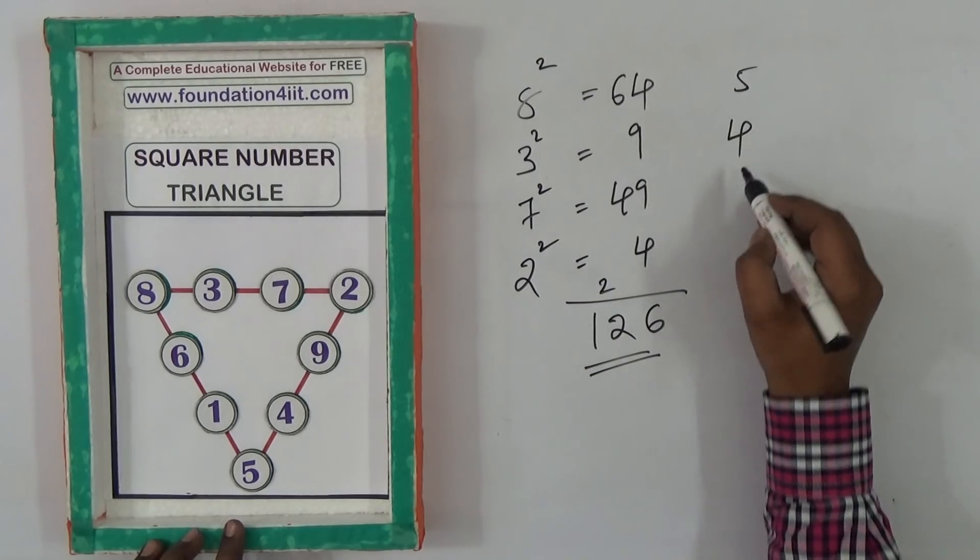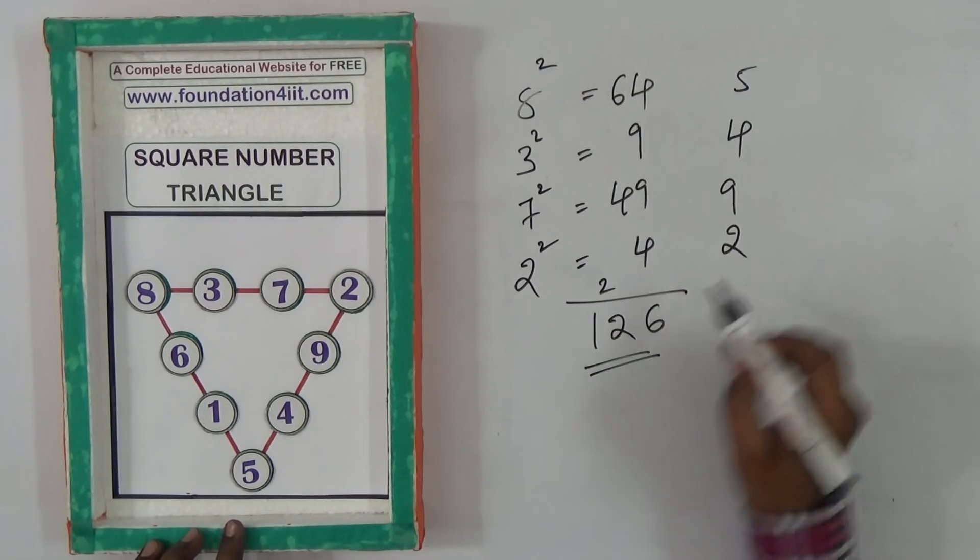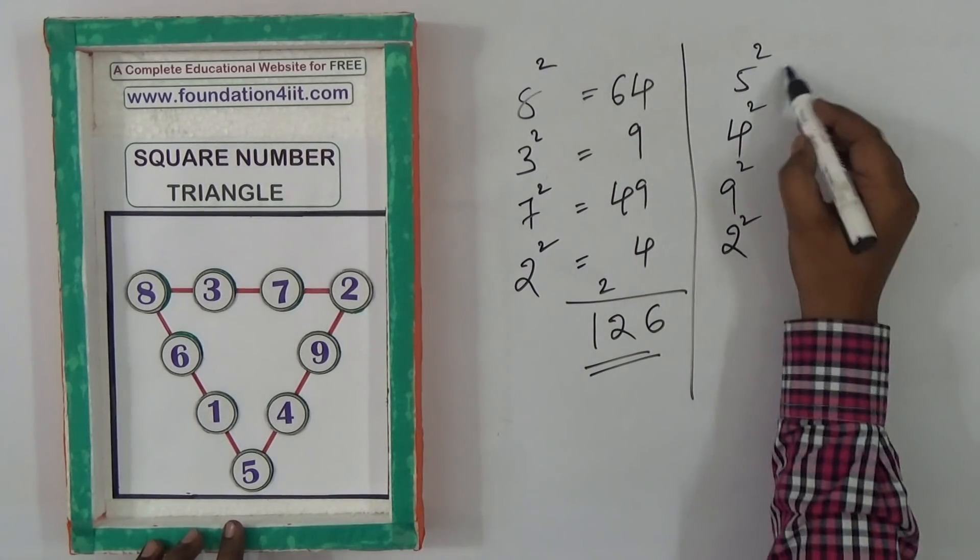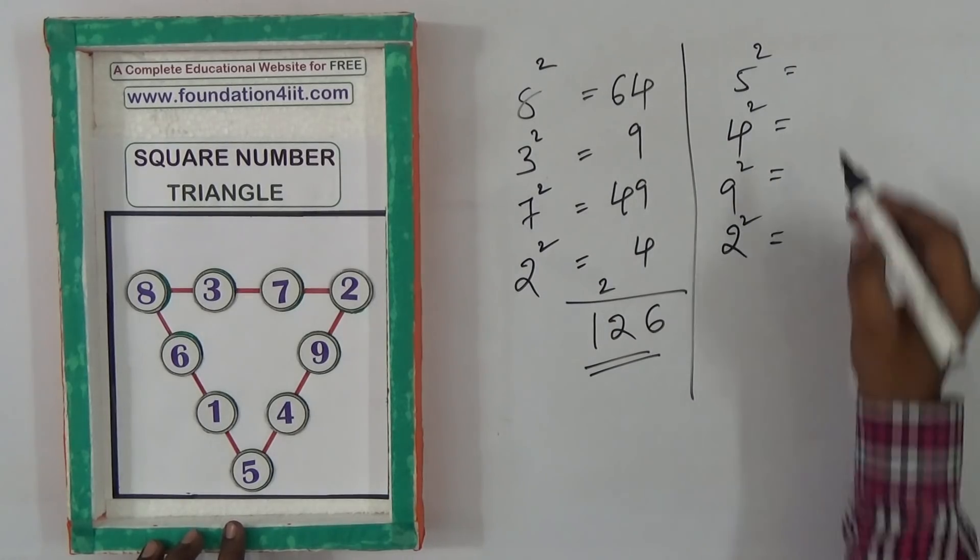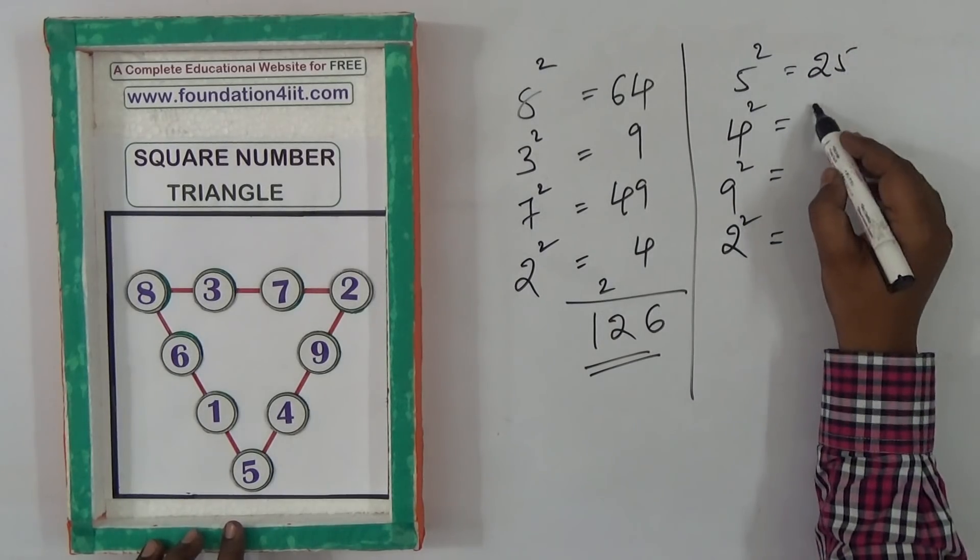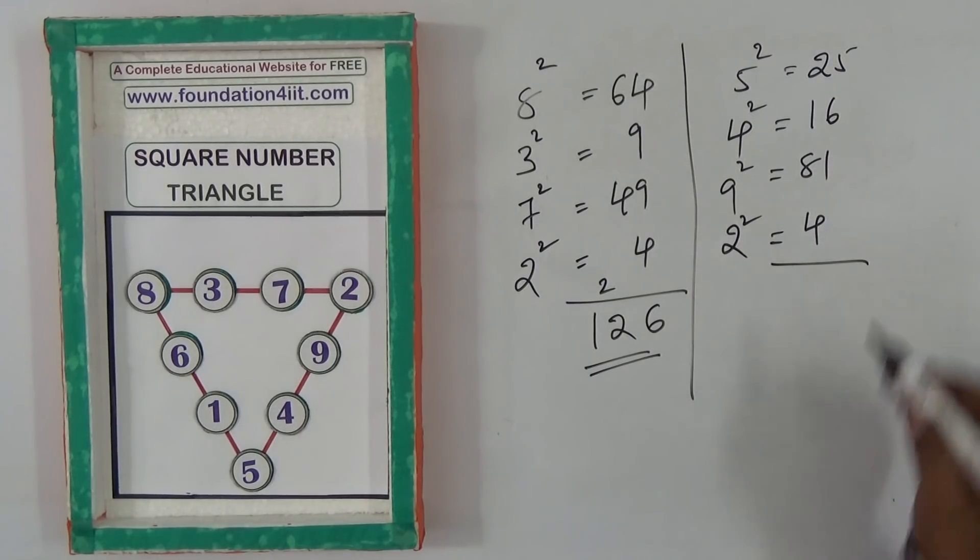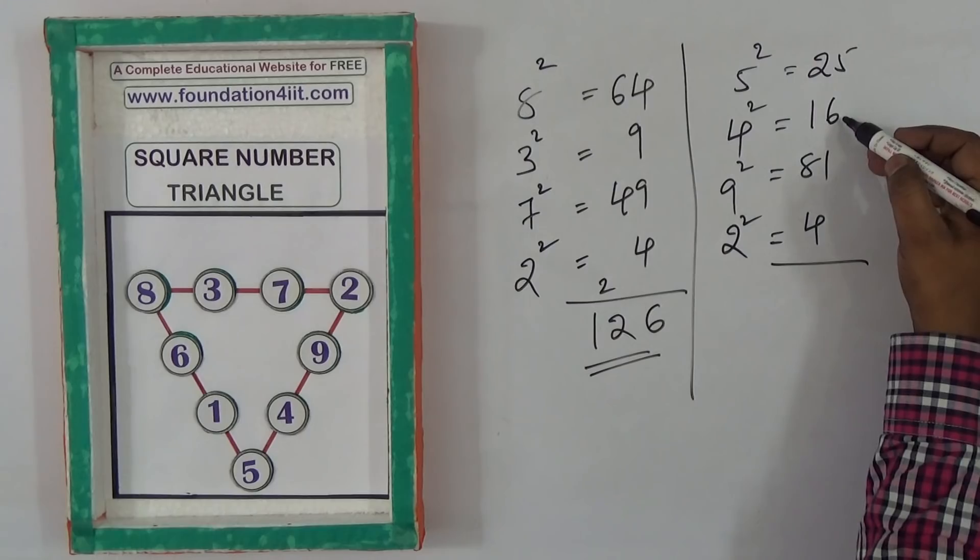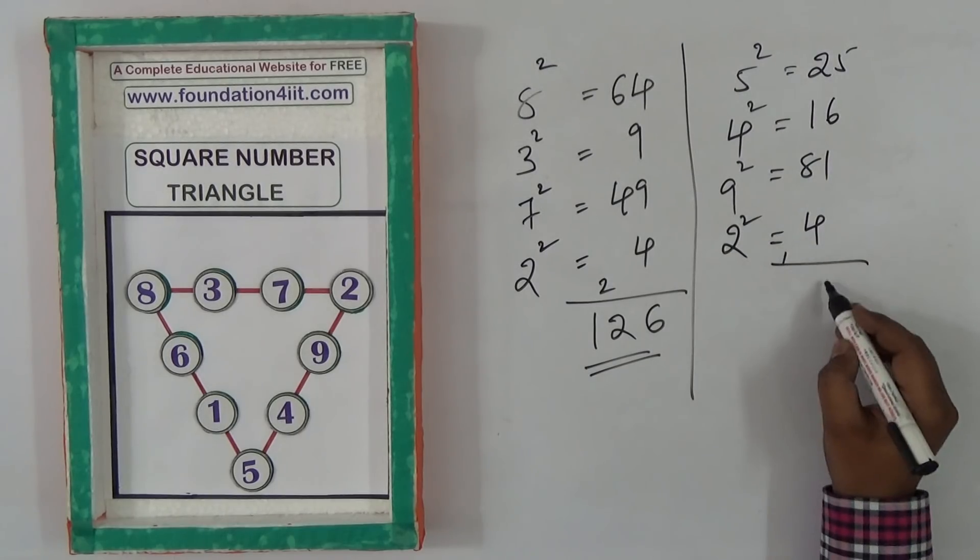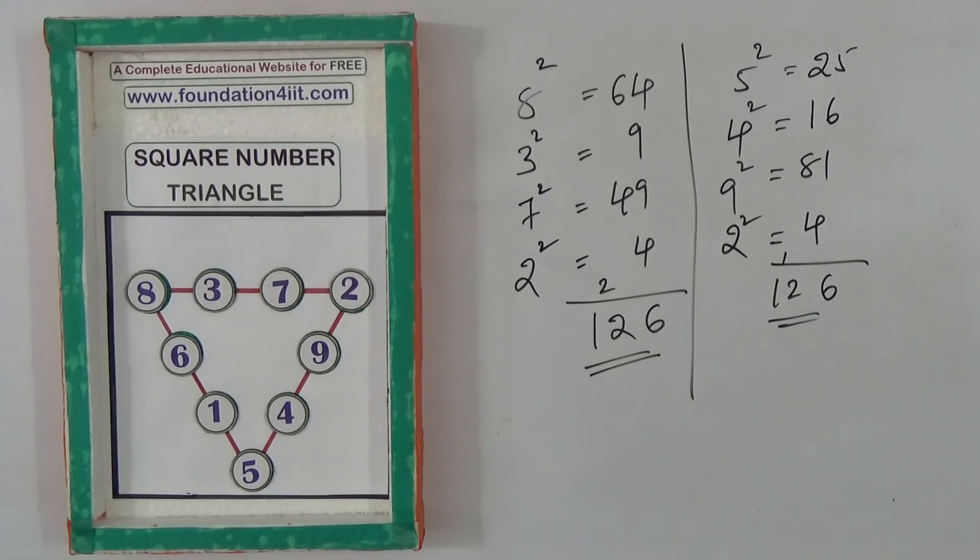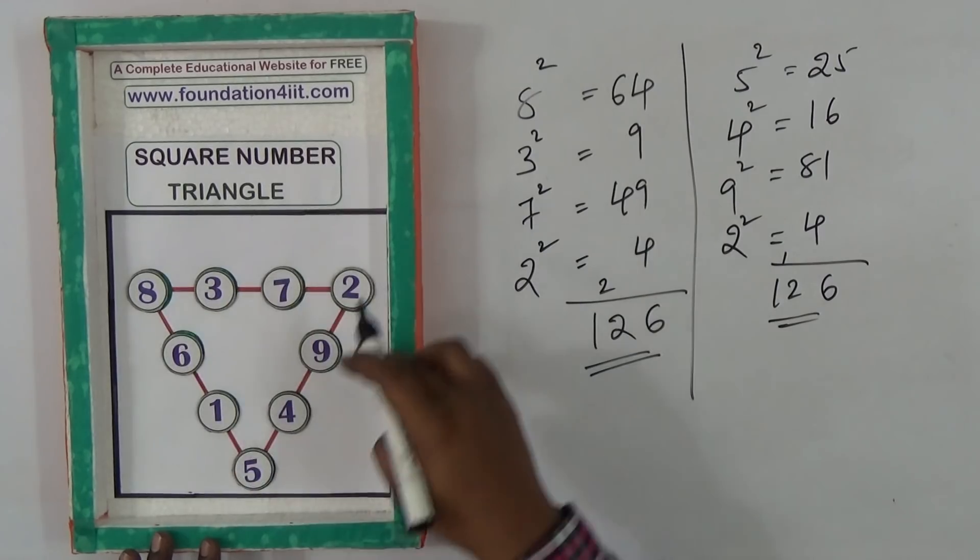This straight line, when you apply the squares, 5 square, 4 square, 9 square. 5 square is 25, 16, 81, and 4. So 126. Sum of the squares of every straight line is also same. Every straight line sum is 20.